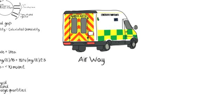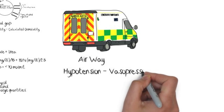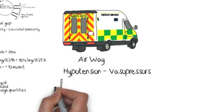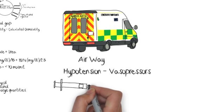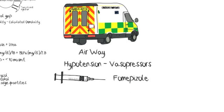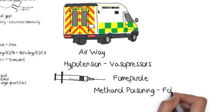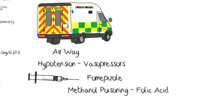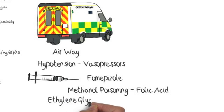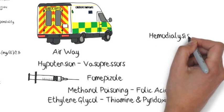The airway should be protected in these patients. They will usually have hypotension, so IV fluids are needed, and if still hypotensive, vasopressors should be used. The antidote fomepizole should be given. If methanol poisoning is suspected, add folic acid; if ethylene glycol poisoning is suspected, give thiamine and pyridoxine. Some patients also require hemodialysis, so involve nephrology early.